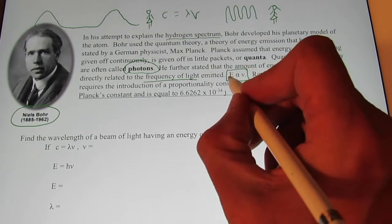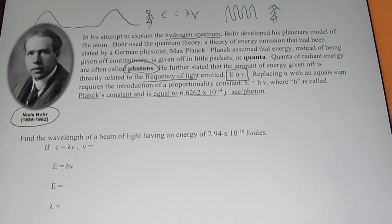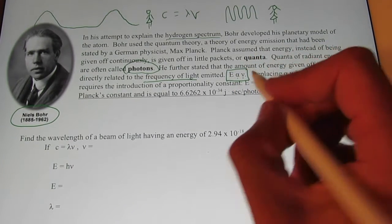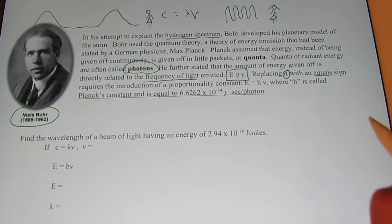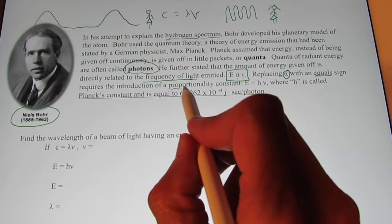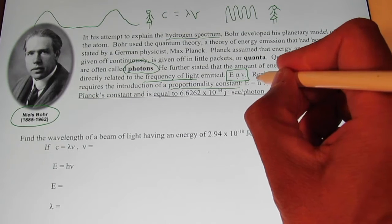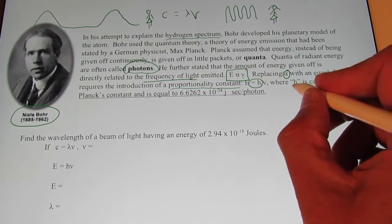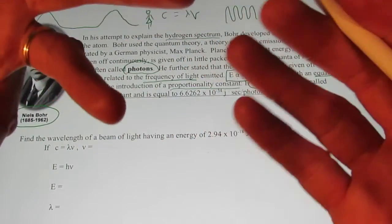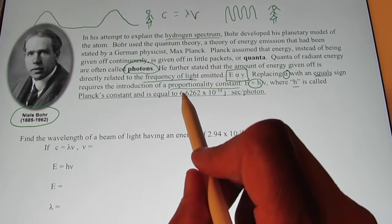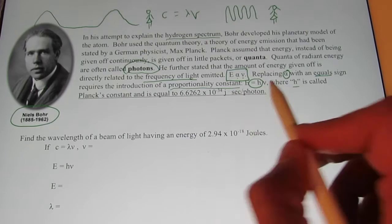So we write this equation. E is proportional to the frequency. That means when the frequency gets bigger, so does the energy. Now we can't do math with a proportionality sign. We want to get rid of it. And we want to replace it with an equal sign. Now to do that, we need to introduce a proportionality constant. Now that proportionality constant is the letter H. And H became known as Planck's constant. And it is a numerical value that doesn't change. That's what constant means. And it is 6.6262 times 10 to the negative 34th joule seconds per photon.